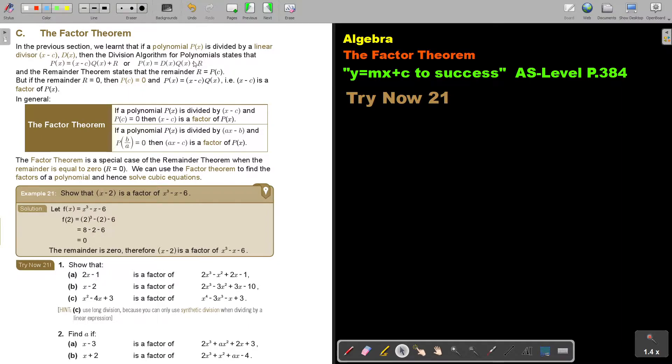Or, if I just write it like this, in the place of the divisor I just put dx. And the remainder theorem states that the remainder r is equal to pc. But, if the remainder is 0, then pc is 0, and this divisor is then a factor of px. So, basically, if I get a remainder of 0, then it means this divisor is a factor.